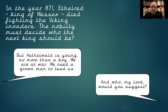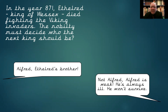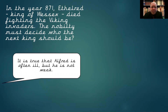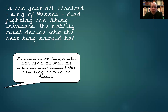Let's say we need a grown man to lead us — and who would you suggest? Alfred, Æthelred's brother. So we're still keeping it in the family; the throne remains in Æthelred's family, but they are suggesting his brother rather than his son. Not Alfred — Alfred's weak, he's always ill, he won't survive. So there are doubts about Alfred's character. It is true that Alfred is often unwell, but he's not weak. Alfred is not a true warrior — he would prefer to spend his time reading books than preparing for battle. We must have kings who can read as well as lead us into battle. Our new king should be Alfred.